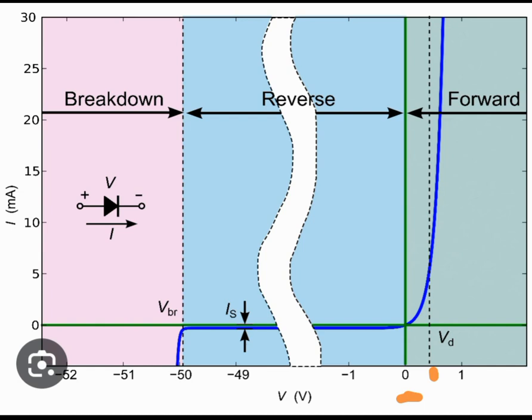You see there is a small amount of current, and as soon as you turn on the diode, which happens when your applied voltage reaches Vd, there is a sudden increase in the diode current.